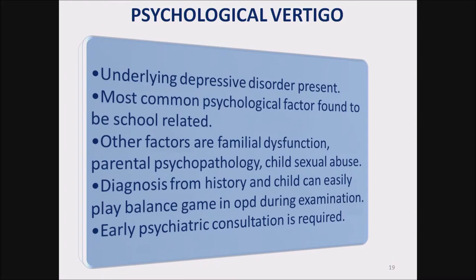Psychological vertigo — again most common in children. An underlying depressive disorder is present. The most common psychological factors are school-related. Other factors include familial dysfunction, parental psychopathology, and child sexual abuse. Diagnosis is from history, and the child can easily play a balance game in the OPD during examination. Early psychiatric consultation is required.